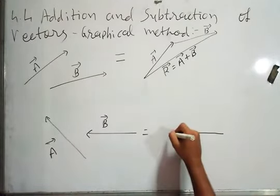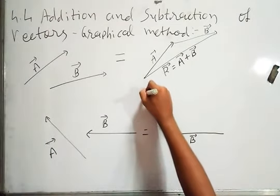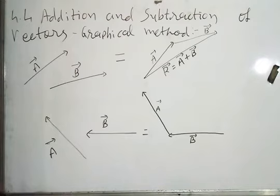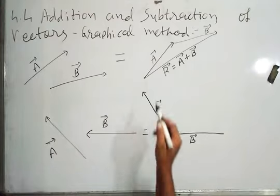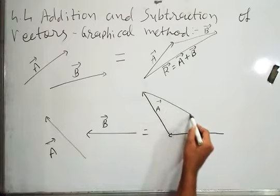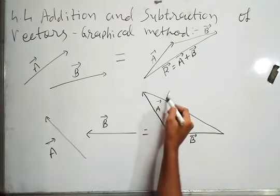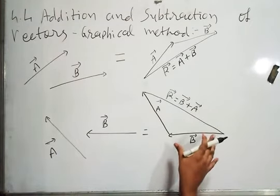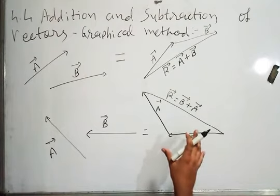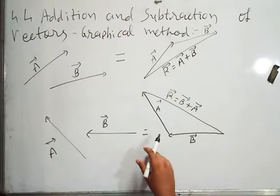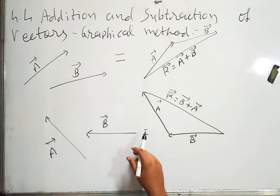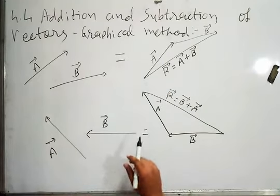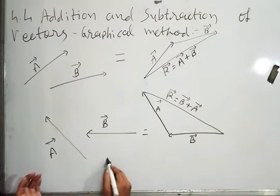So the direction should not change when placing a vector on another. Now I put vector A on the head of B, keeping vector A in its original direction. To find the addition, I draw a line from A's head to B's tail. So vector R equals vector B plus vector A, because vector B remains in its own place — we only change vector A's position, not its direction. If I move B instead, the answer will be the same.